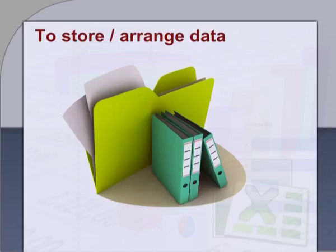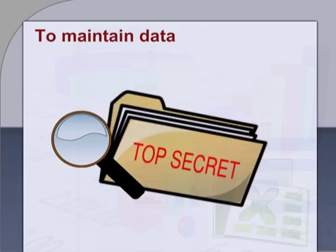First, to store or arrange data: it is very essential to store or arrange data in a systematic way so that it can be easily accessed. A file with a specific name can be opened and data can be used easily. Files can be duplicated to avoid data loss. Tabular form is one of the best methods to arrange data systematically.